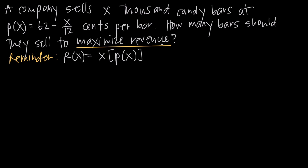What do we know about revenue? Revenue is always equal to the number of things that we sell times the price that we sell them for. For example, if I'm selling apples for 25 cents apiece and I sell four of them, four times 25 cents gives me a dollar. So revenue is always the number you sell multiplied by the price per item. This will be our model for the revenue function.